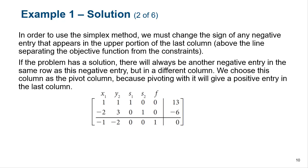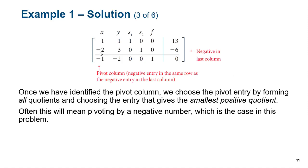If the problem is going to have a solution, there's always going to be another negative entry somewhere in that same row but in a different column. We choose this column as the pivot column because pivoting with it will give a positive entry in that last column. Because we have a negative here, we look for any other negatives somewhere else, find one, and that becomes our pivot column. We check our ratios like normal — this gives me a ratio of 3 versus 13, so we're going to pivot on this number. This often means we're pivoting with the other negative we found, but it's not always the case.